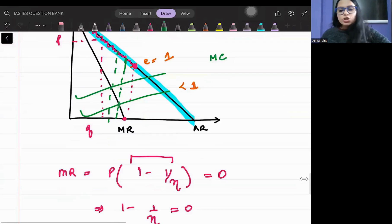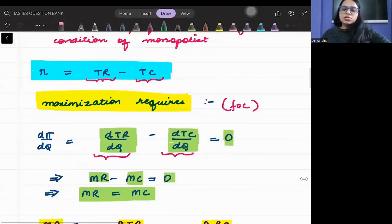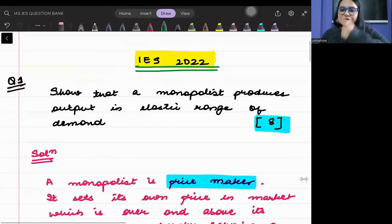So a monopolist will always operate in the elastic region. Is that making sense? Is that clear? Okay, thank you.